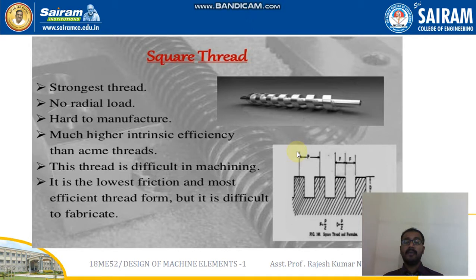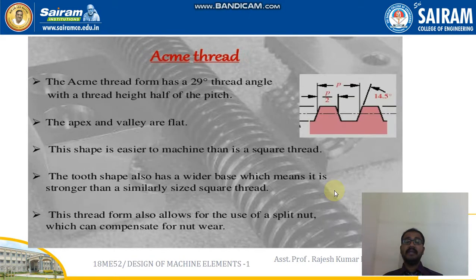The square thread is lower in friction and is the most efficient thread form, but it is difficult to fabricate. The pitch is defined as the distance from the center of the first thread to the adjacent thread. The pitch can also be defined as the height of the thread. The angle between each thread is 90 degrees.